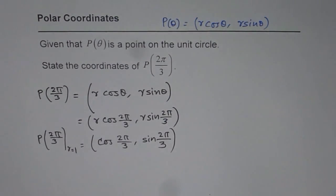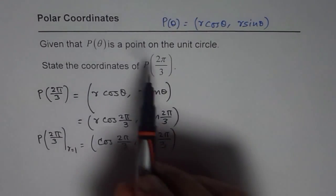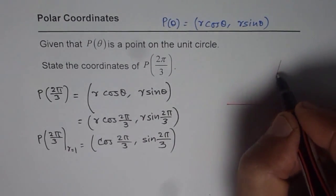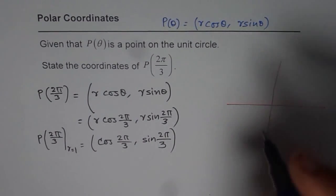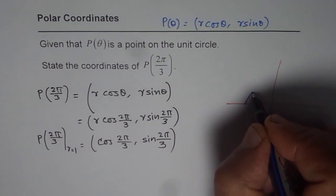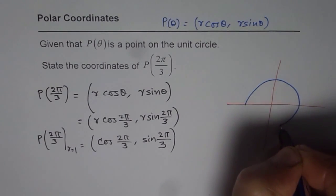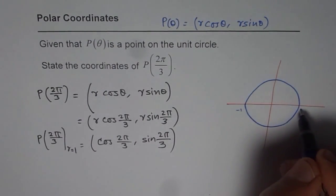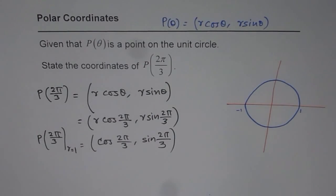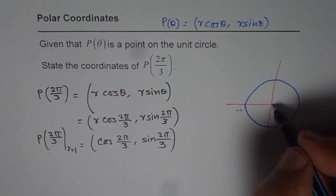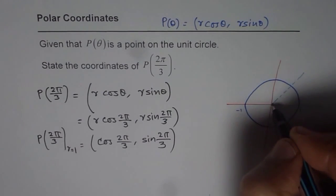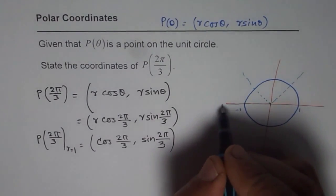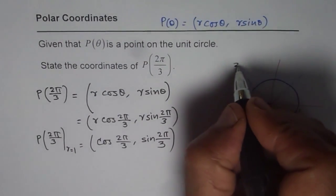Now let us look into the question once again. We want these coordinates on a unit circle, so let me draw a unit circle. This is radius 1, and we make a circle here, with minus 1 and plus 1 on the axes. We are talking about P of 2 pi by 3 — so this is pi by 3, this is 2 pi by 3, and this will be 3 pi by 3 or pi.